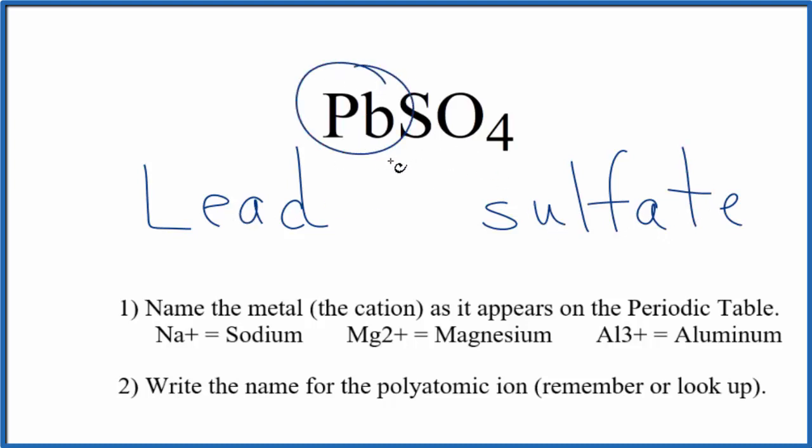But lead is a transition metal and can have different charges depending on what it's bonded to. If we look at the sulfate ion, the whole thing has a 2- ionic charge. So since the sulfate has that 2-, the lead has to be 2+ for these charges to balance out and give us a net charge of zero.